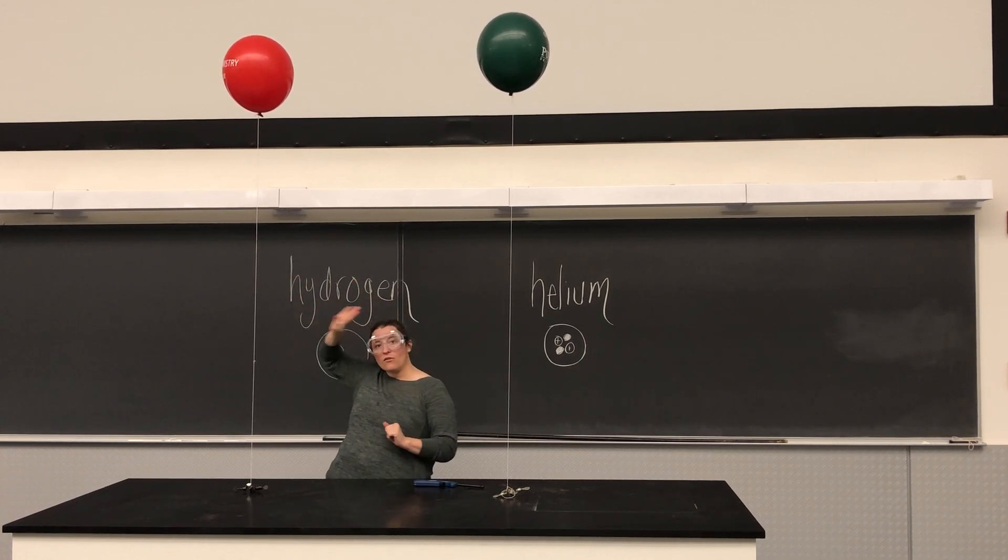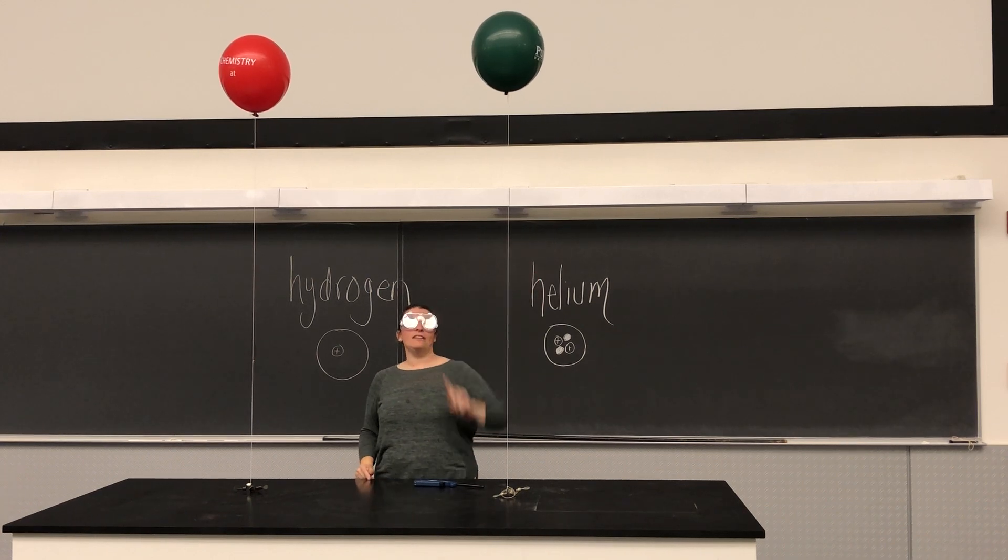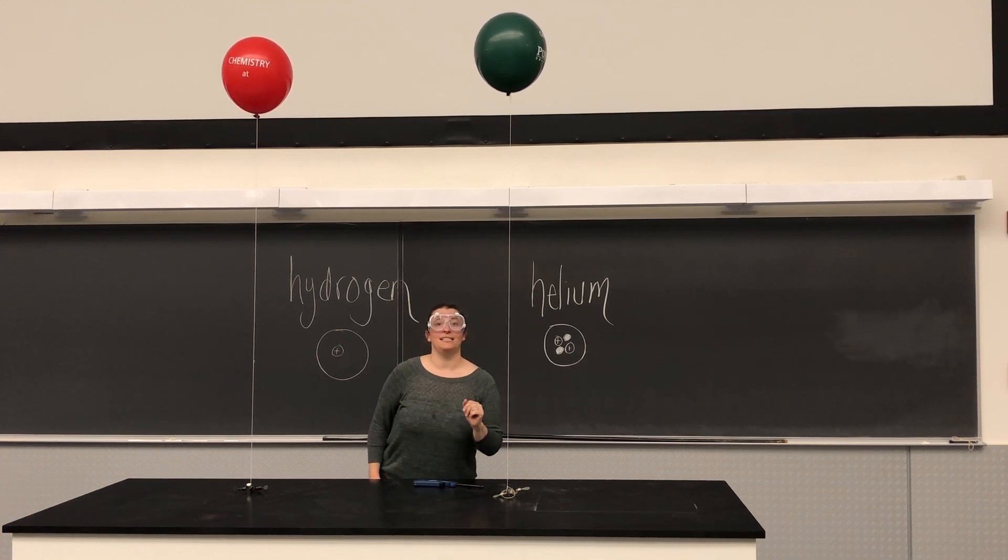We've got hydrogen over on this side of the periodic table, helium on that side of the periodic table. Helium is one of the noble gases,